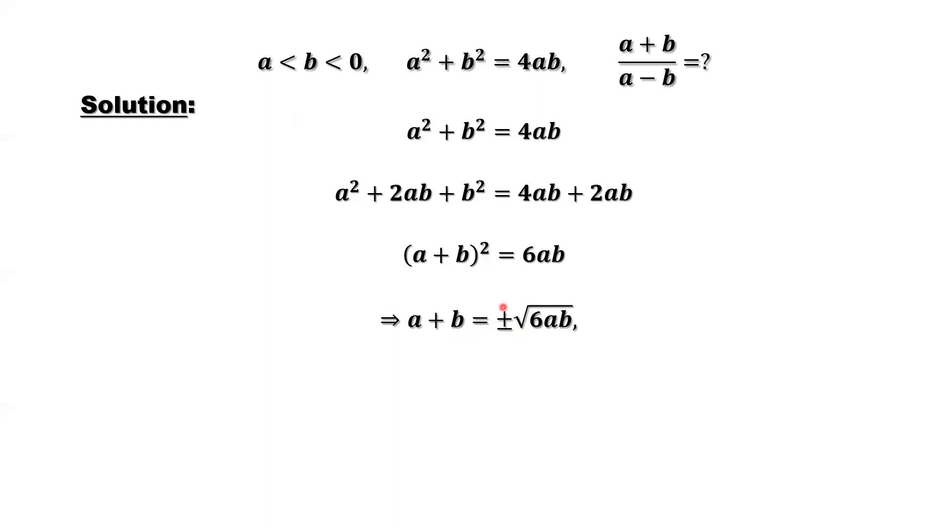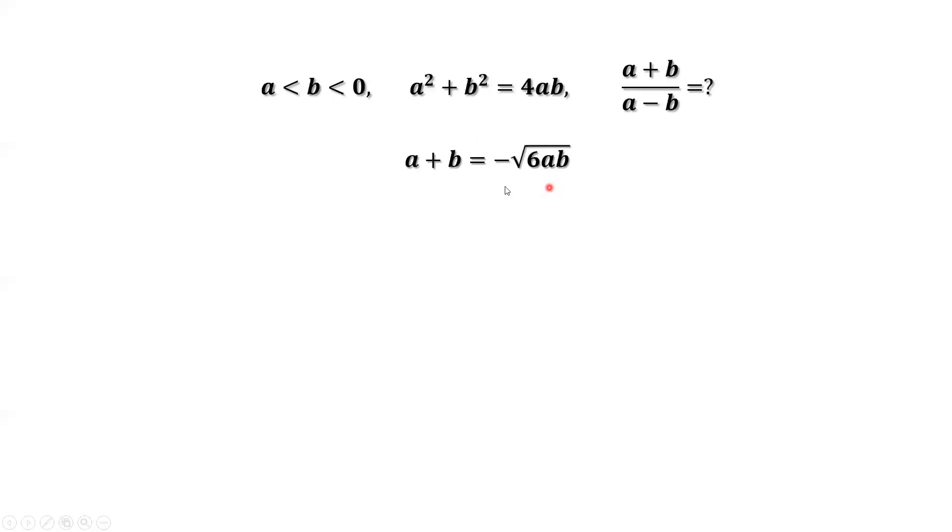How to determine the negative or positive sign here? Use the given condition. Both a and b are negative. A plus b should be negative. The answer should be negative. A plus b equals negative square root of 6ab. This is the result we have so far.